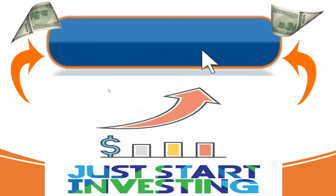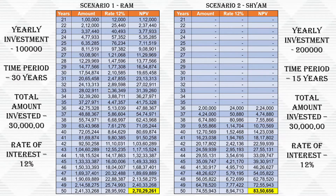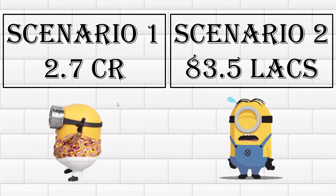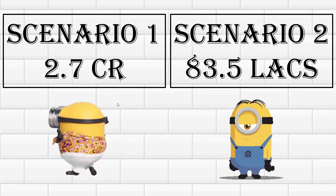Let us look at another example to highlight this point. On the screen, you see two different scenarios. In both scenarios, the total amount invested is 30 lakhs and the rate of interest in both cases is 12% compounded annually. However, in scenario 1, an amount of 1 lakh is invested every year from the age of 21, whereas in scenario 2, an amount of 2 lakhs is invested every year but it starts at the age of 36. Now, if we compare the amount at the age of 50, scenario 1 generates a final corpus of 2.7 crores versus 83.5 lakhs in scenario 2. This results in an astonishing difference of more than 223%. So, you should aim to start investing as early as possible to optimize the magic of compounding.